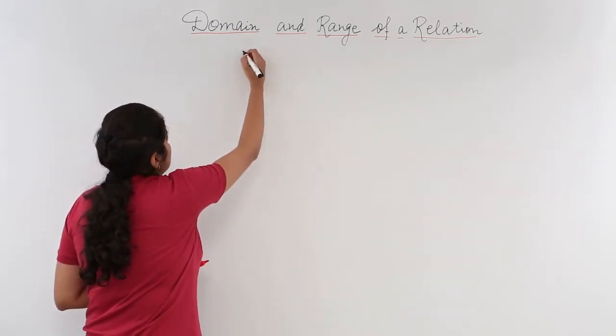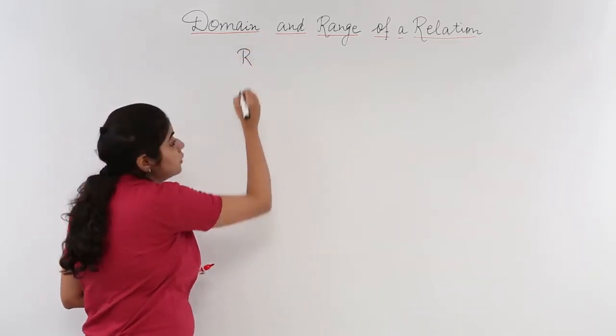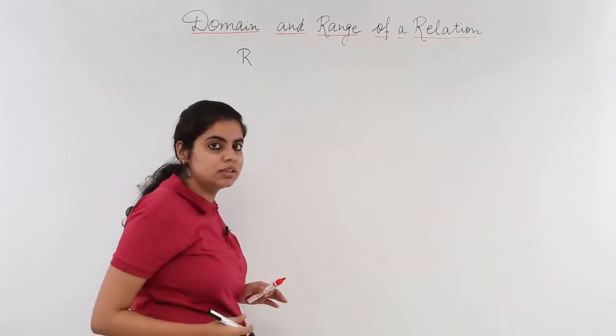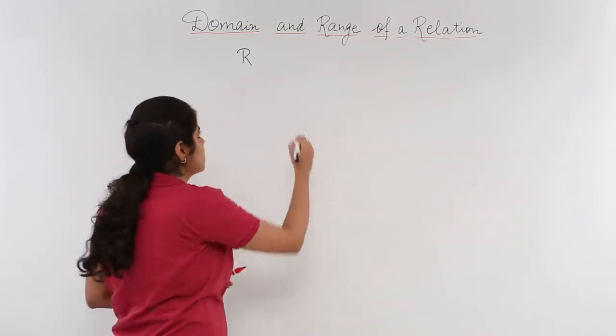Now let's say we have a relation defined and I know that the relation defined would be in the form of ordered pairs that we saw in the previous videos.